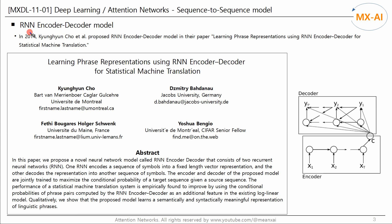Now let's look at the RNN encoder-decoder model. In 2014, Kyungyan Cho et al. proposed the RNN encoder-decoder model in their paper, 'Learning Phrase Representations Using RNN Encoder-Decoder for Statistical Machine Translation.' Since it deals with sequence data, it is also called a sequence-to-sequence model. In their abstract, they describe a novel neural network consisting of two RNNs: one encodes a sequence of symbols into a fixed-length vector representation, and the other decodes the representation into another sequence of symbols. This paper deals with sequences of word representation vectors for NLP, but we will deal with sequences of real-valued vectors for time series analysis.